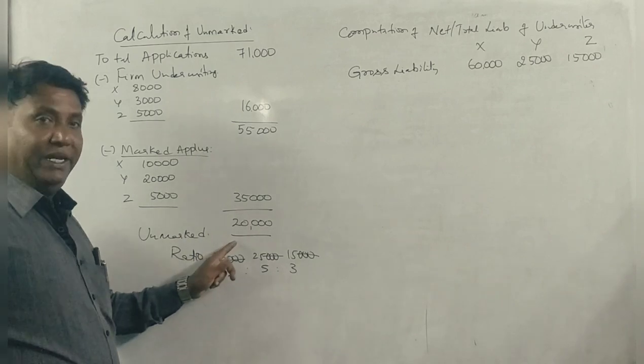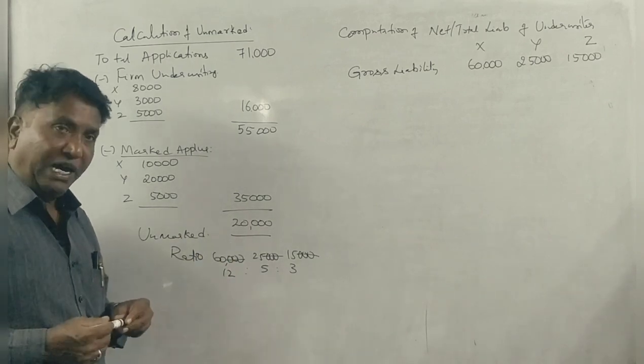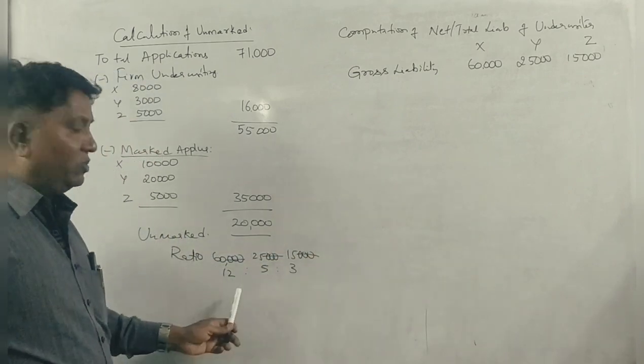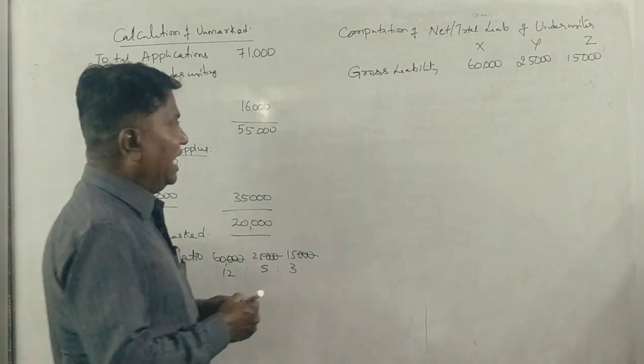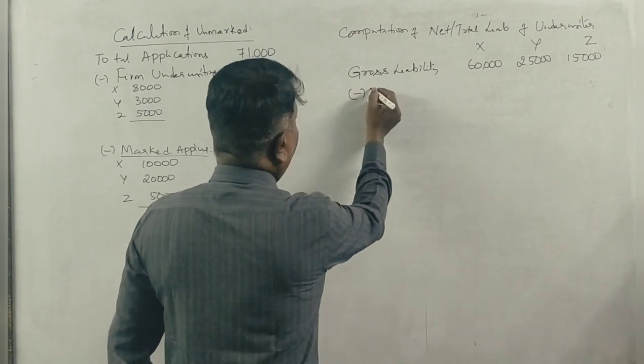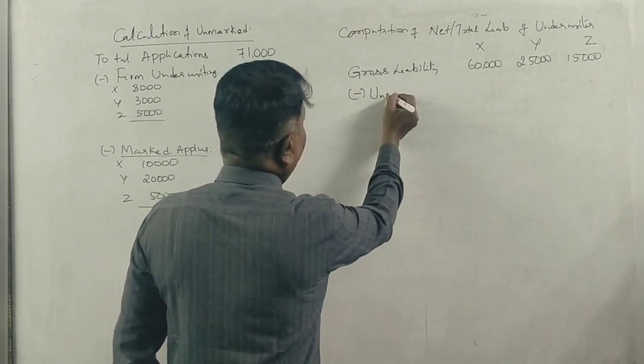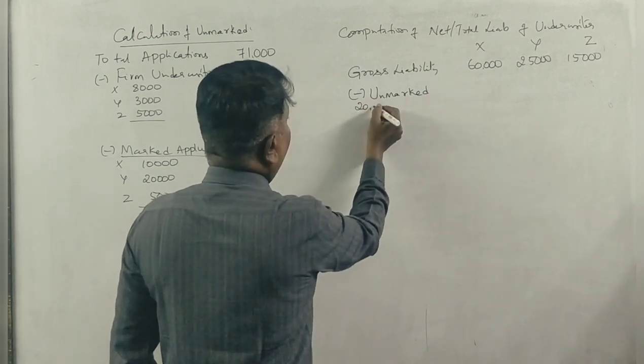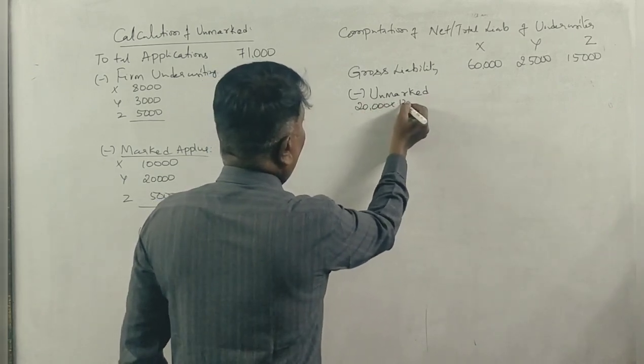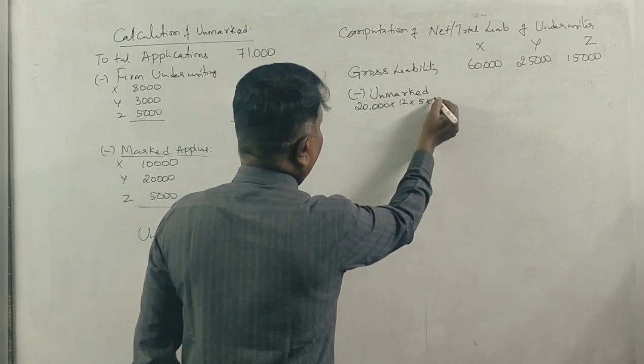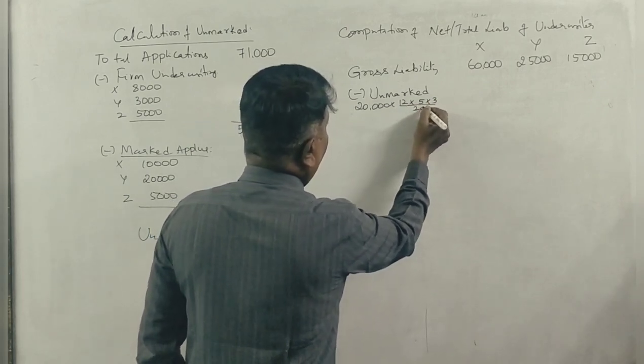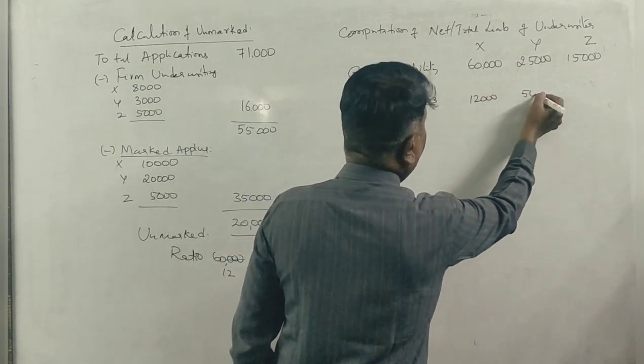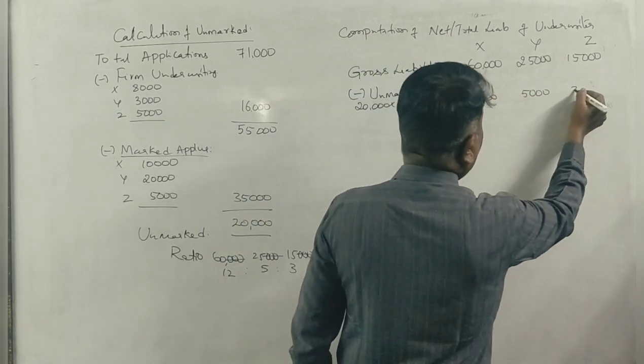I will get unmarked applications distributed. X, Y, and Z, 12 is to 5 is to 3 ratio. I will get 12 by 20, 5 by 20, 3 by 20. That is 12,000, 5,000, 3,000.